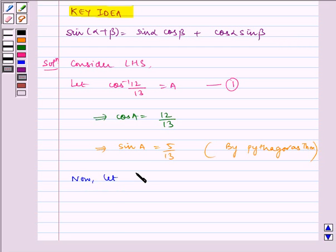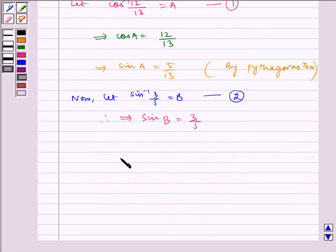Now let sin inverse 3 by 5 is equal to B. Let us name it as equation 2. Therefore, it implies sin B is equal to 3 by 5. Again, by using Pythagoras theorem we get cos B is equal to 4 by 5.